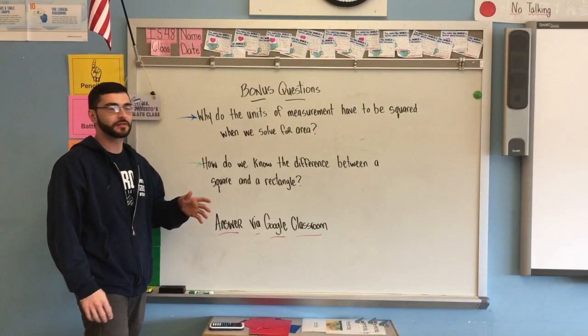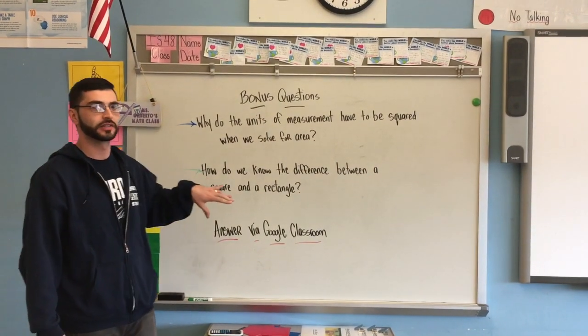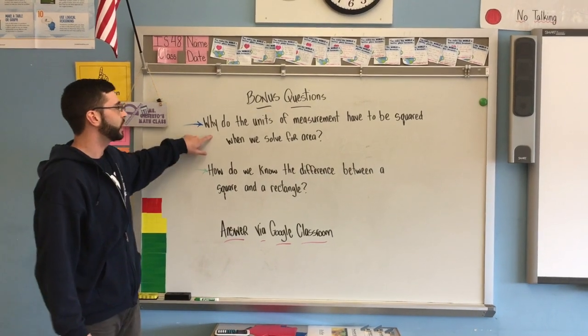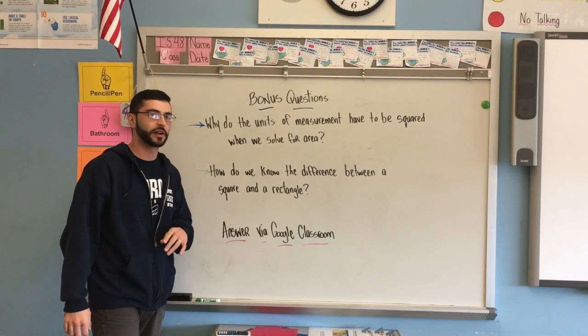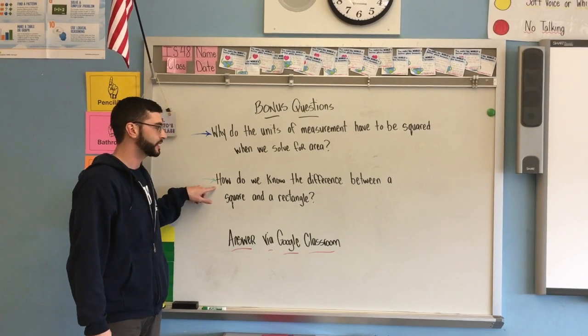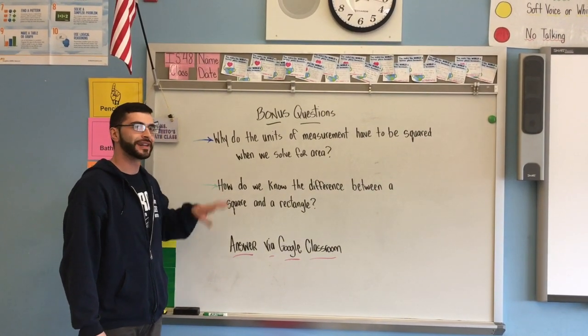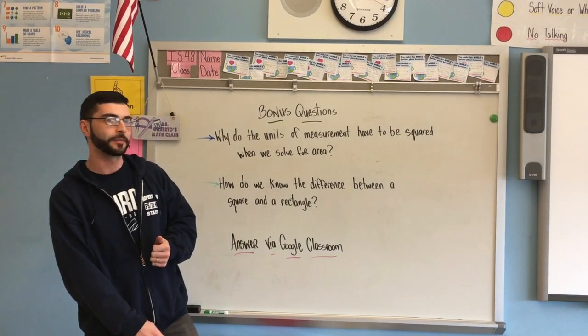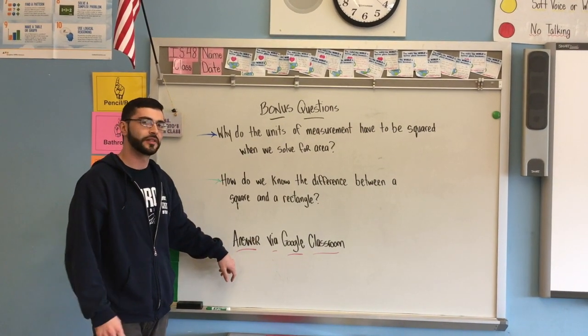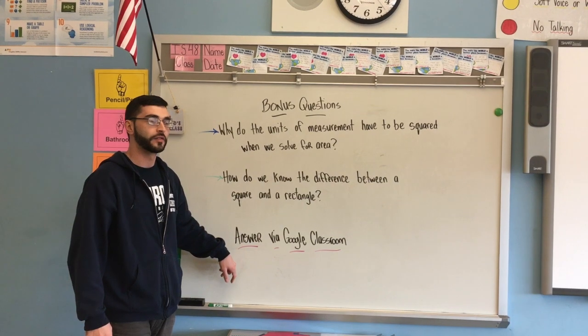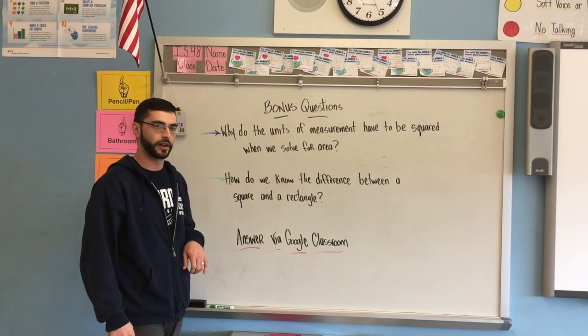So to wrap up this lesson, we're going to leave you with these two bonus questions. The first one is, why do the units of measurement have to be squared when we solve for area? The second one is, how do we know the difference between a square and a rectangle? Two things that we did mention, but we didn't elaborate on. You can answer these and submit it via Google Classroom. If you have a question, you can get in contact with either Ms. Colberto or I.